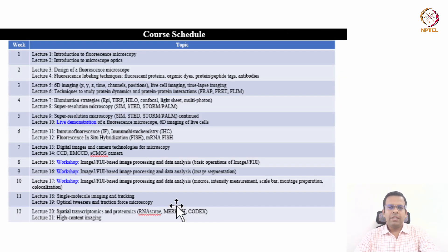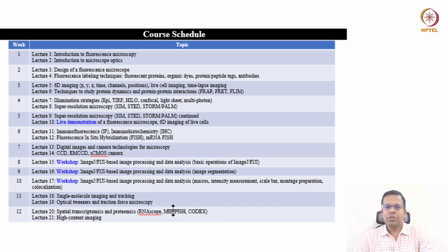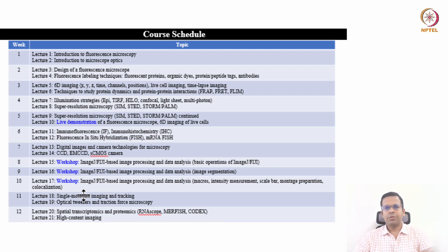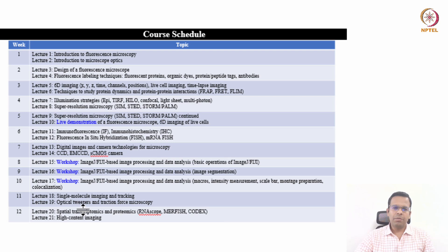Here you can find the course schedule. As mentioned, this is a 12-week course and the entire content is distributed in 21 lectures. This course also contains a live demonstration of a fluorescence microscope in lecture 10, where I will demonstrate how to set up the microscope for live cell imaging. Lectures 15, 16, and 17 consist of a workshop on image processing and data analysis using ImageJ, where I will show you how to quantify biological information from fluorescence microscopy images.